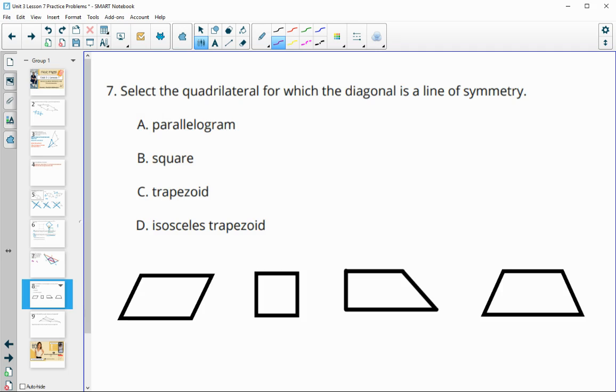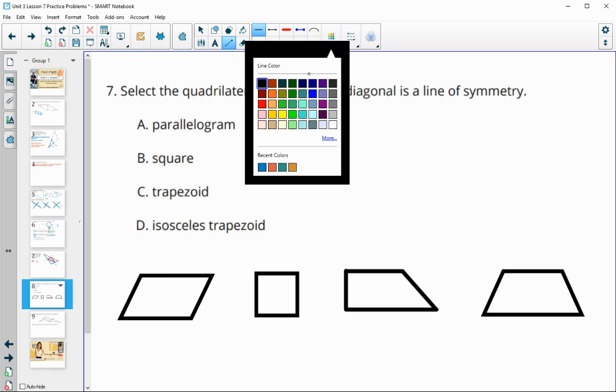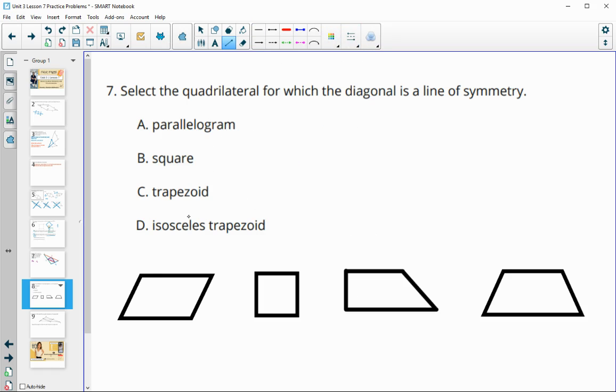Number seven: select a quadrilateral for which the diagonal is a line of symmetry. So I've drawn the quadrilateral for which the diagonal is a line of symmetry. We know in a parallelogram that's not true, since the elongated side here does not work. So a parallelogram is not true. A square—the diagonal is a line of symmetry because the side lengths are the same, so this one would be good. Trapezoid—trapezoid diagonal definitely does not cut that in half for a regular trapezoid or an isosceles trapezoid, so both of these are wrong as well.